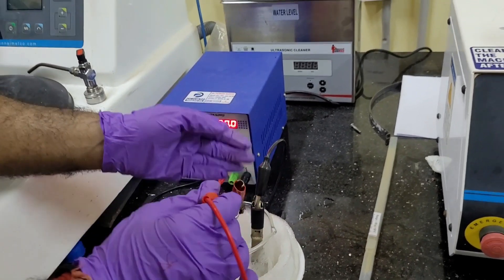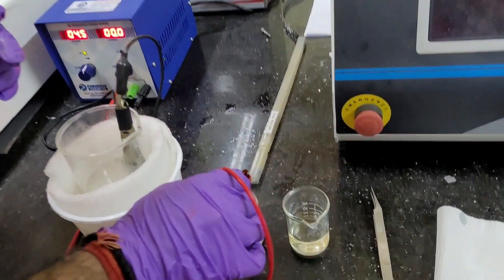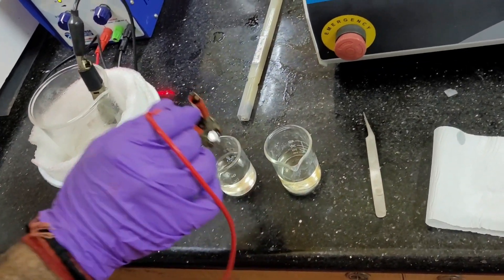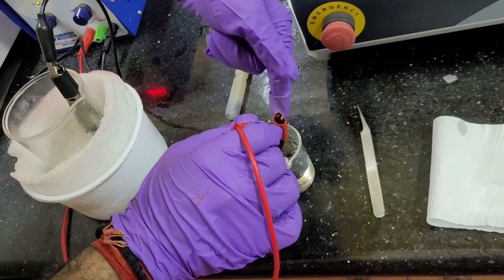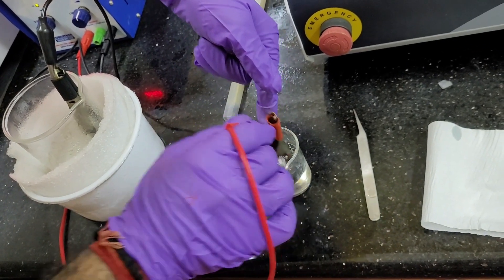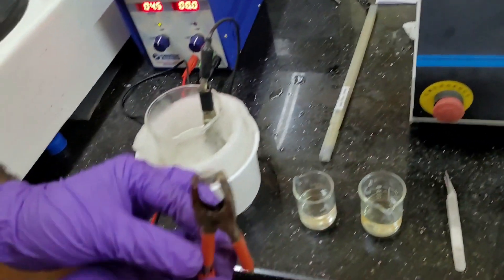Thank you very much. Now, after doing this electropolishing, immediately we have to wash this sample into the first beaker. And then, for more cleaning, we have to use the second beaker where same ethanol is there. So, in this way, we can do.